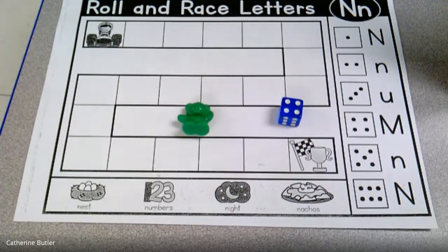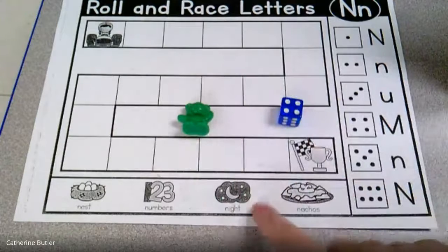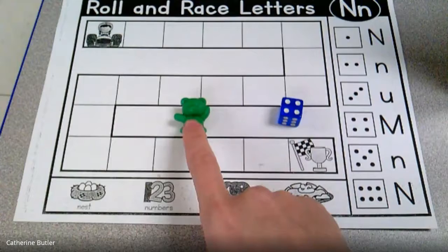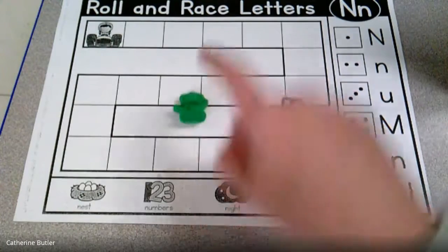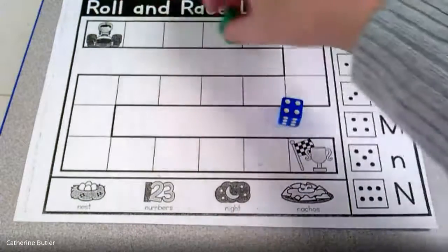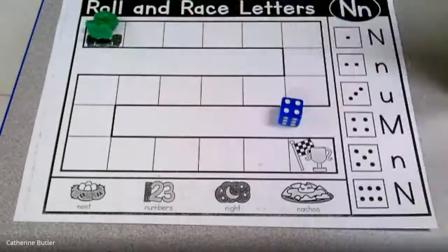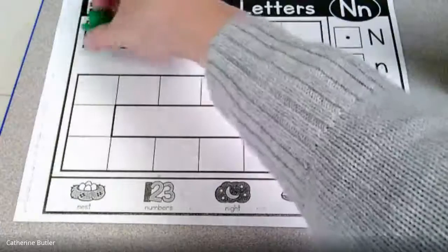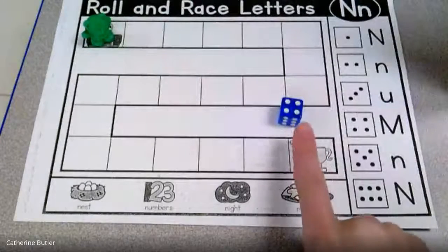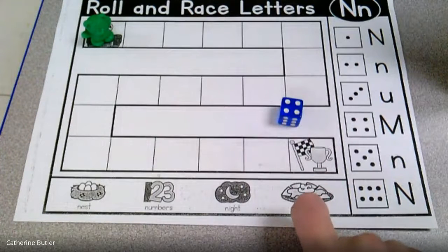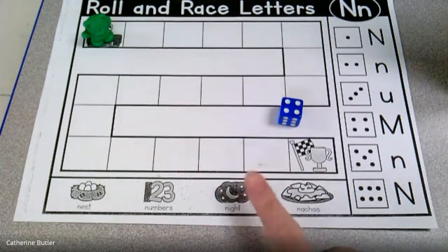So first you're gonna need two things besides your paper. You're gonna need some kind of person or a bear or a little item to move through your game board. So I have a little counter bear. I'm gonna put him right at the start. They haven't started moving yet. And you're also gonna need your die that Miss Butler gave you. Can you go get those things? Perfect. Are you ready?